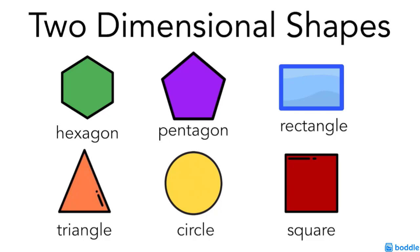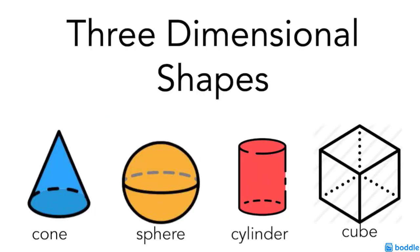and the square. They don't have any 3D effect to them and they have sides and vertices. Now, the three dimensional shapes